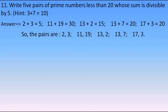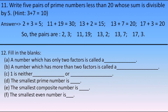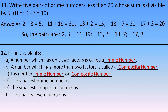The twelfth question: fill in the blanks. A number which has only two factors is called a prime number. A number which has more than two factors is called a composite number. 1 is neither prime nor composite. The smallest prime number is 2. The smallest composite number is 4, because 2 and 3 are prime and 1 is neither. The smallest even number is 2.